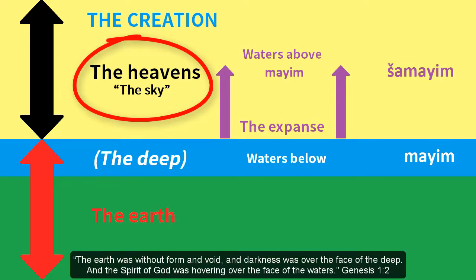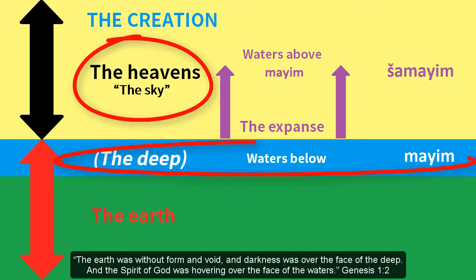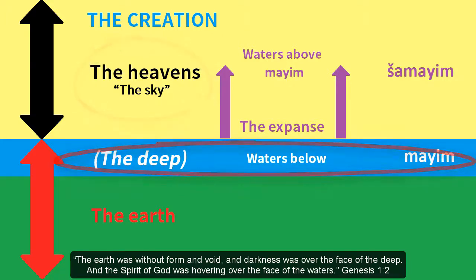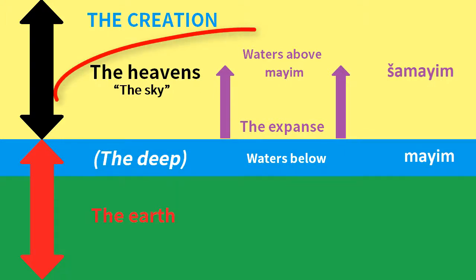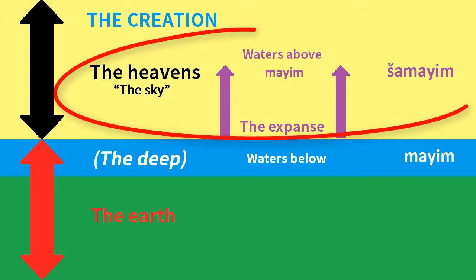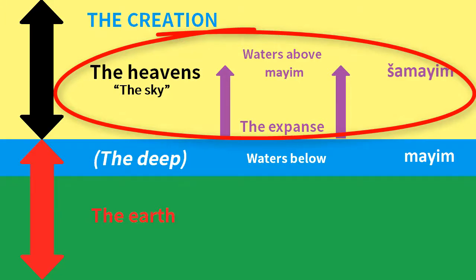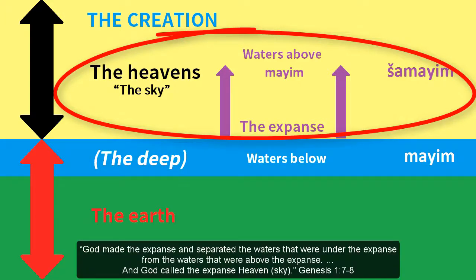The earth was without form and void, and darkness was over the face of the deep. And the Spirit of God was hovering over the face of the waters. The word expanse, formerly translated as firmament, is defined by Genesis as the sky, which is also called the heavens. God made the expanse, and separated the waters that were under the expanse from the waters that were above the expanse.